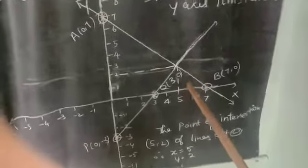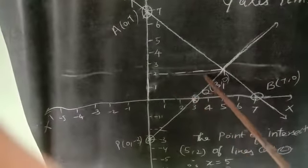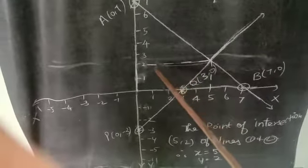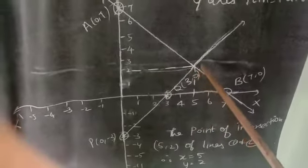So, the two lines intersect that point. Which point? You draw the dot line. So, here is 2, 5. So, 5, 2 is the intersect point.